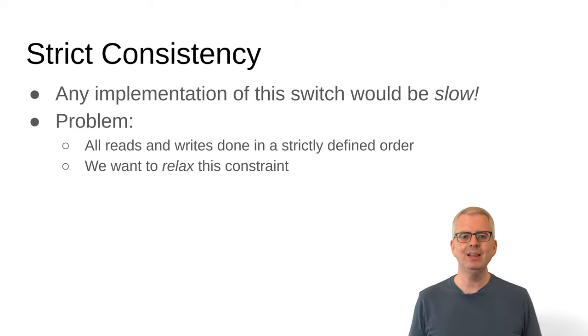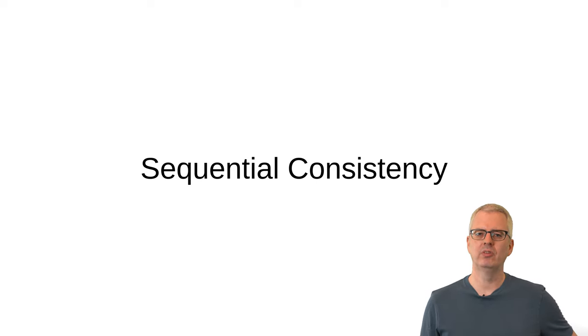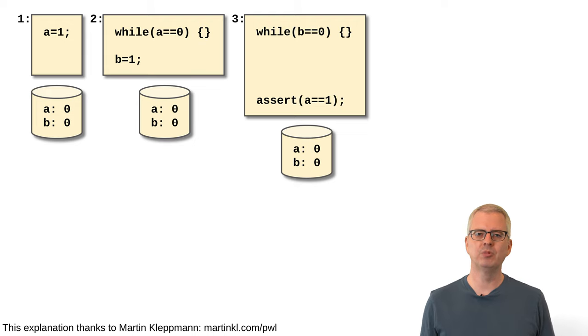Instead, we use something that is slightly more relaxed, called sequential consistency. With sequential consistency, we assume that each process doesn't care about the reads of other processes. All it cares about are the writes done by other processes. With that assumption, we can have each process have its own private copy or cache of all of memory, or at least of the things that it's using. So now each process can run in parallel and keep on running as long as it doesn't need to communicate a write to other processes. So, in this example, the two while loops just keep on spinning, repeatedly reading the values of A and B from their caches, seeing that they have not changed and going around the loop again.